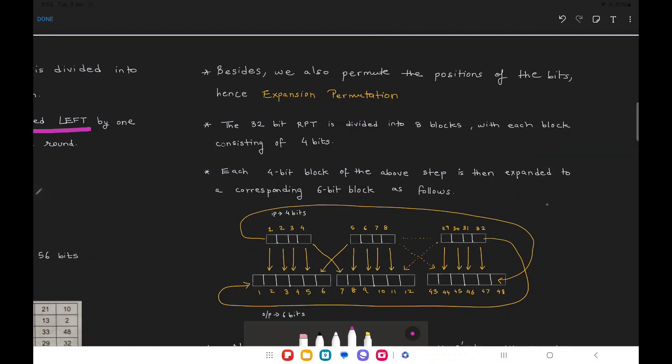All the operations are going to be performed on the RPT. This RPT goes inside the function block and the key is provided to it so that we get a 32-bit output. This is what we have seen so far. What exactly happens is this 32-bit RPT has to be encrypted using this 48-bit key, which is not possible otherwise.